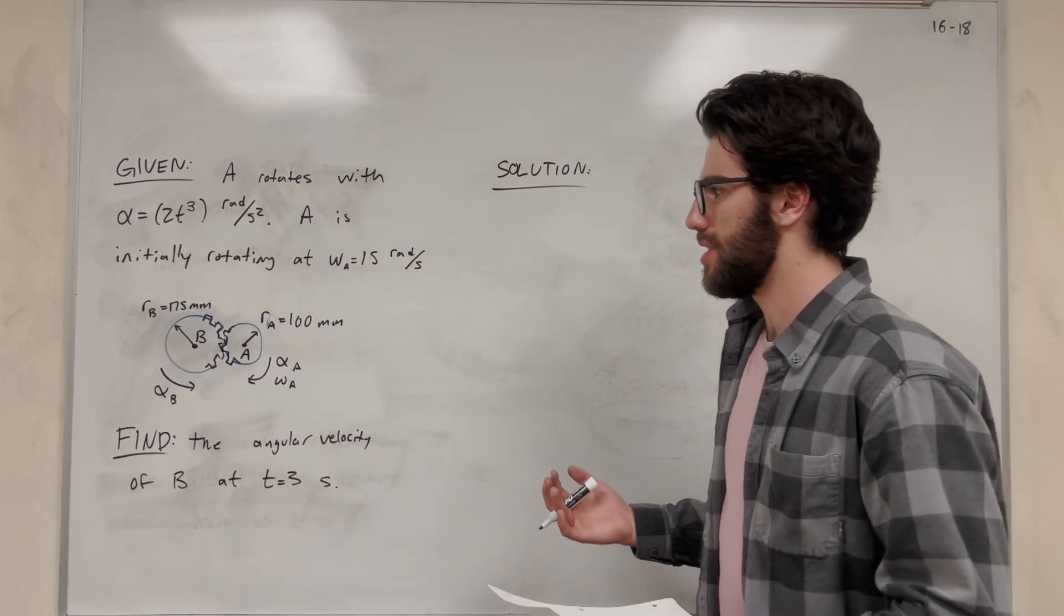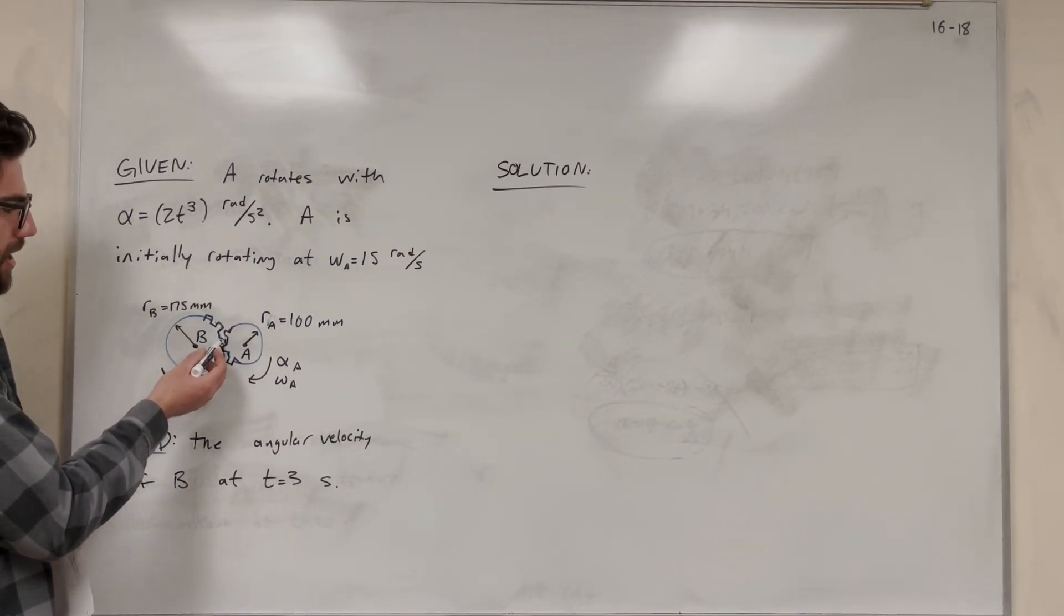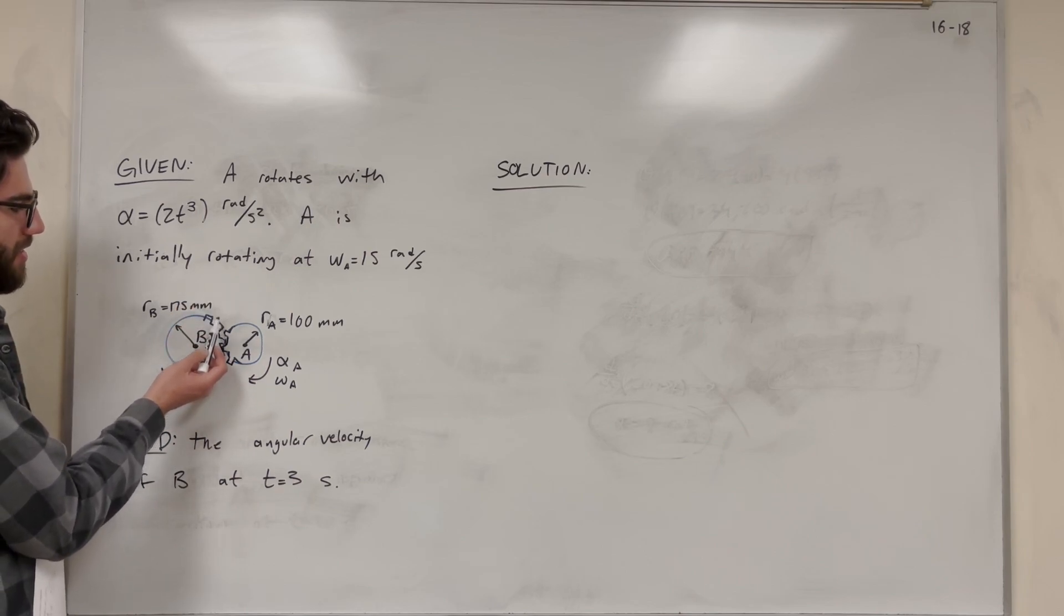Well, what do we know about gears? If gears are locked in, then the velocity has to be the same at the ends of both of them. Because they're both going up at the same time. The velocity of B is the same as the velocity of A.